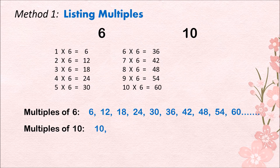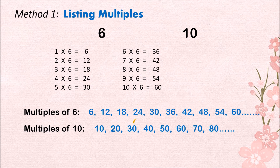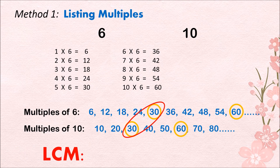The list of multiples for 10 are: 10, 20, 30, 40, 50, 60, 70, 80, and so on. If you notice, as we list the multiples for a number like 6 and 10, we are just doing skip counting. Then after listing some of the multiples for 6 and 10, let's circle all the common multiples. The common multiples are 30 and 60. Between these two, the smallest is 30. Therefore, the least common multiple of 6 and 10 is 30.